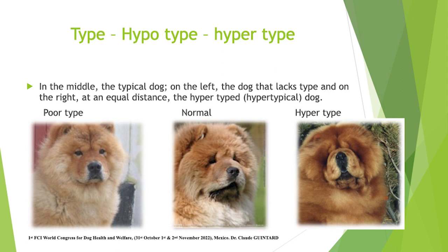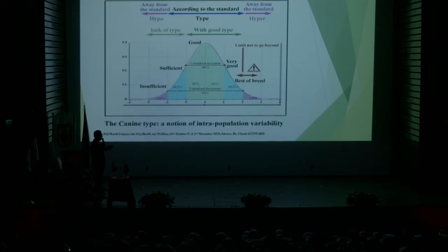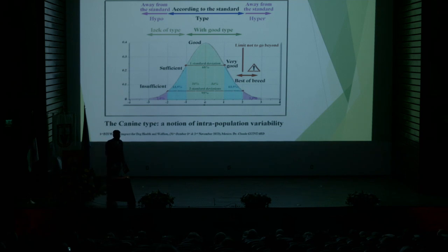What is very interesting is to see that the canine type is a notion of intra-population variability of the genetic variability. You can see here, from disqualified dog through sufficient, good dog, very good, and best of breed — all the distribution of the animals. Normally, all the animals in blue and green here are in the standard. They are according to the standard, they are what we call in the type.